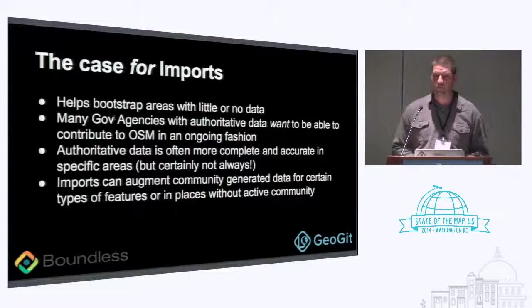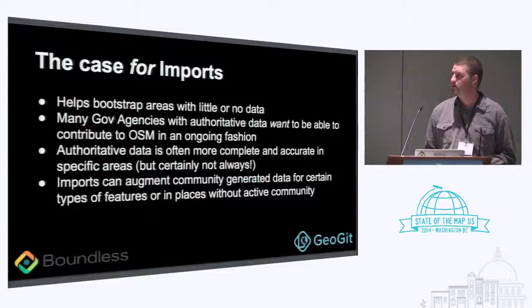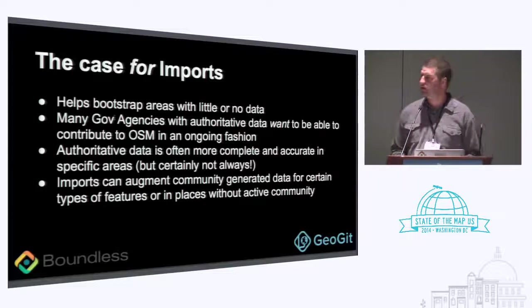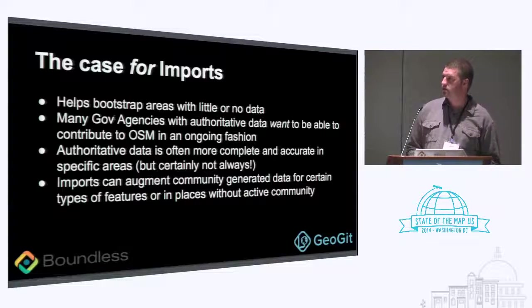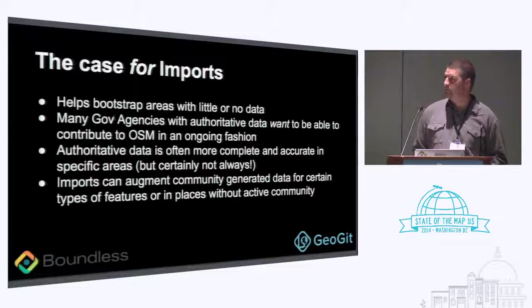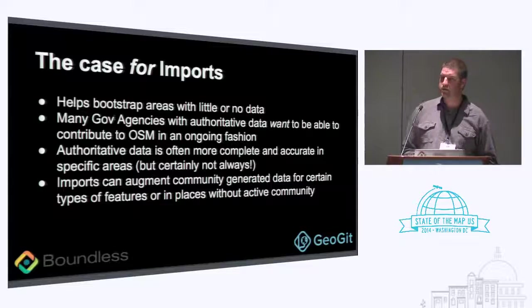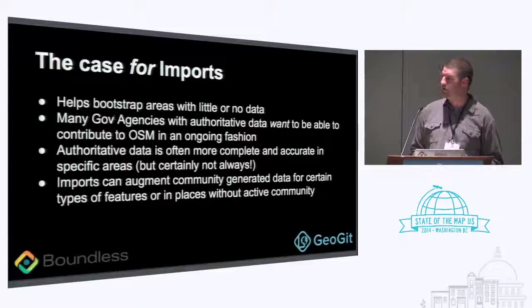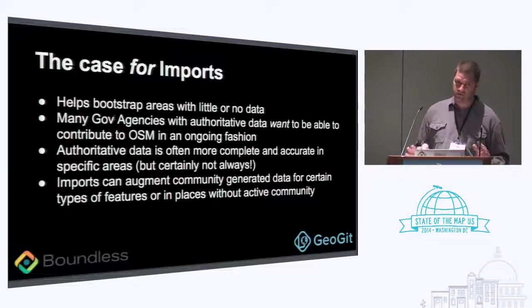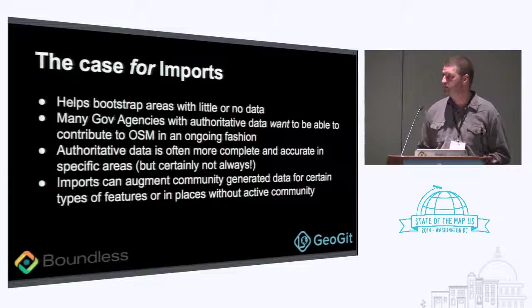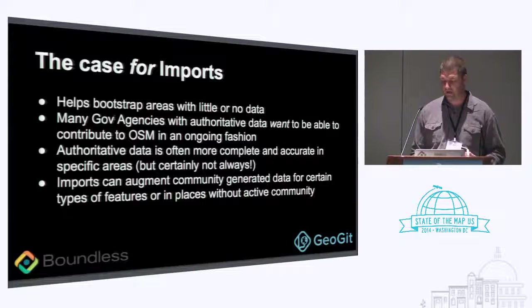This talk is really about doing imports with GeoGit into OSM. Serge has recently written a series of blog posts about the benefits and stumbling blocks to imports. The case for imports is that it really helps bootstrap areas with little or no data. In our work with authoritative data agencies, we find they really want to contribute to OSM in an ongoing fashion rather than just dump data over the wall. Authoritative data is often more complete and accurate in specific areas, and imports can augment community-generated data for features that can't be easily crowdsourced.